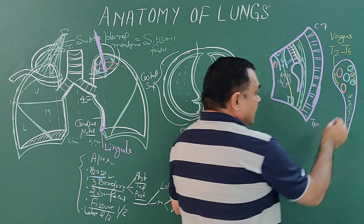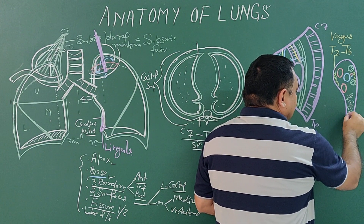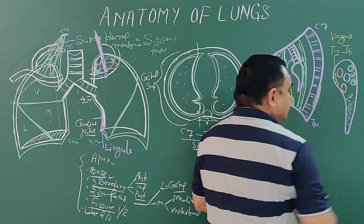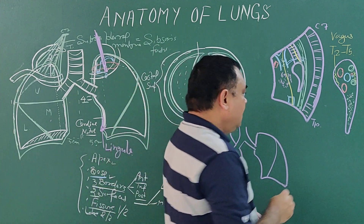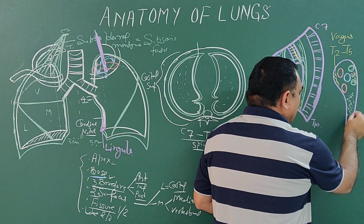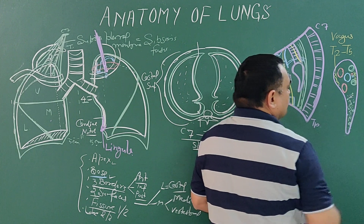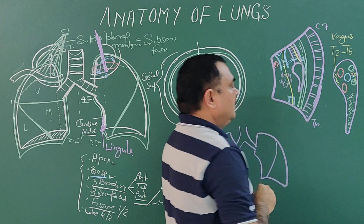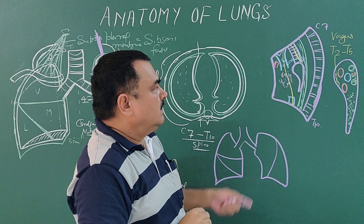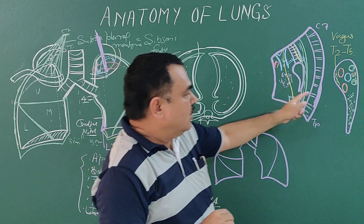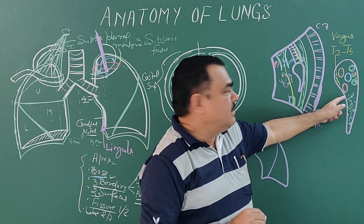Also here lymphatic vessels are present. This is the root of the lung on the right side.